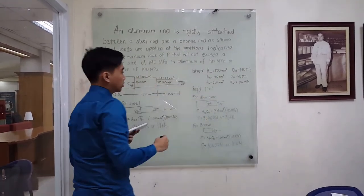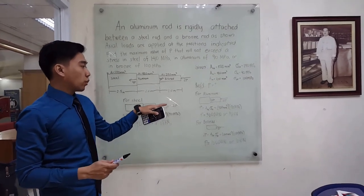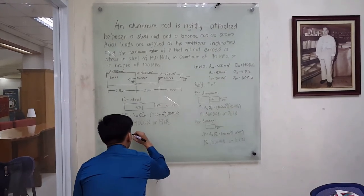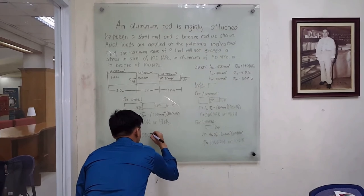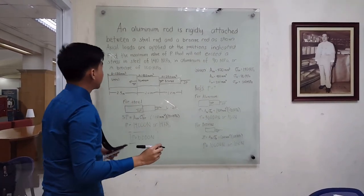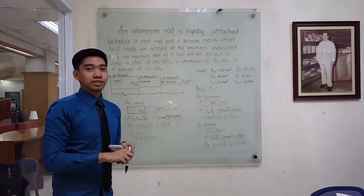For safe value, we will use the lowest among the three, which is equal to 10,000 Newton. This is the maximum value of P. That's it, and thank you for listening.